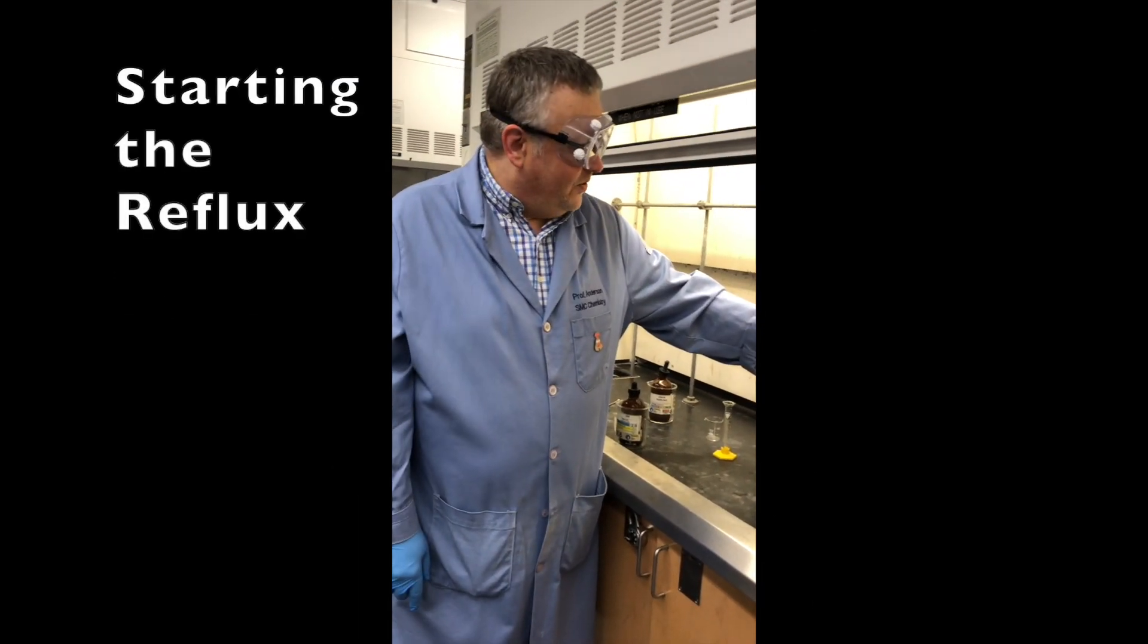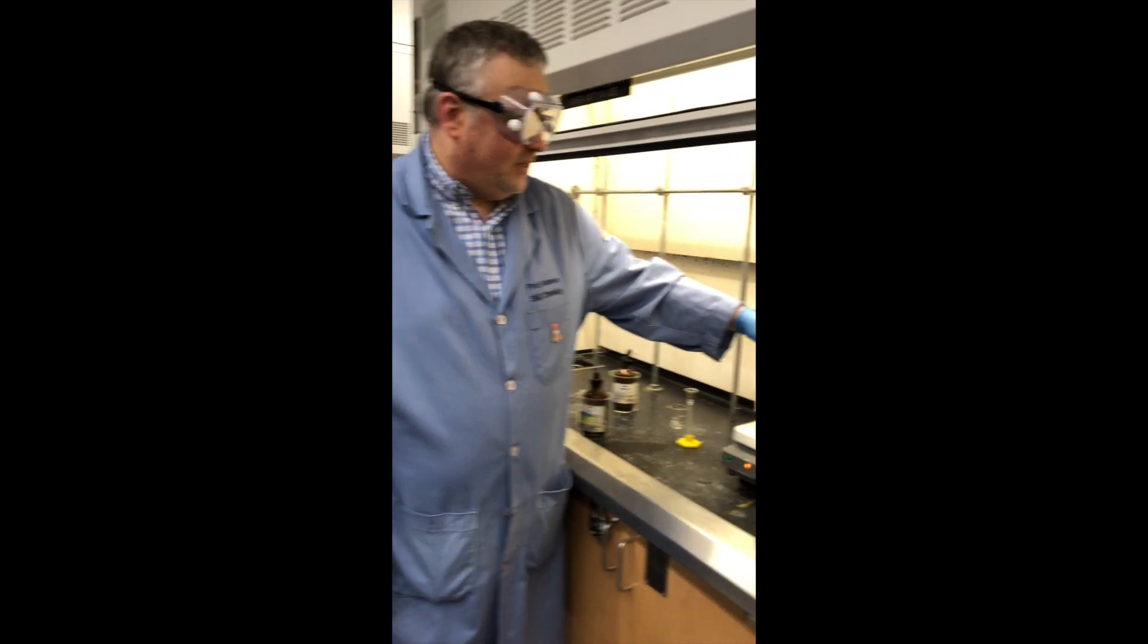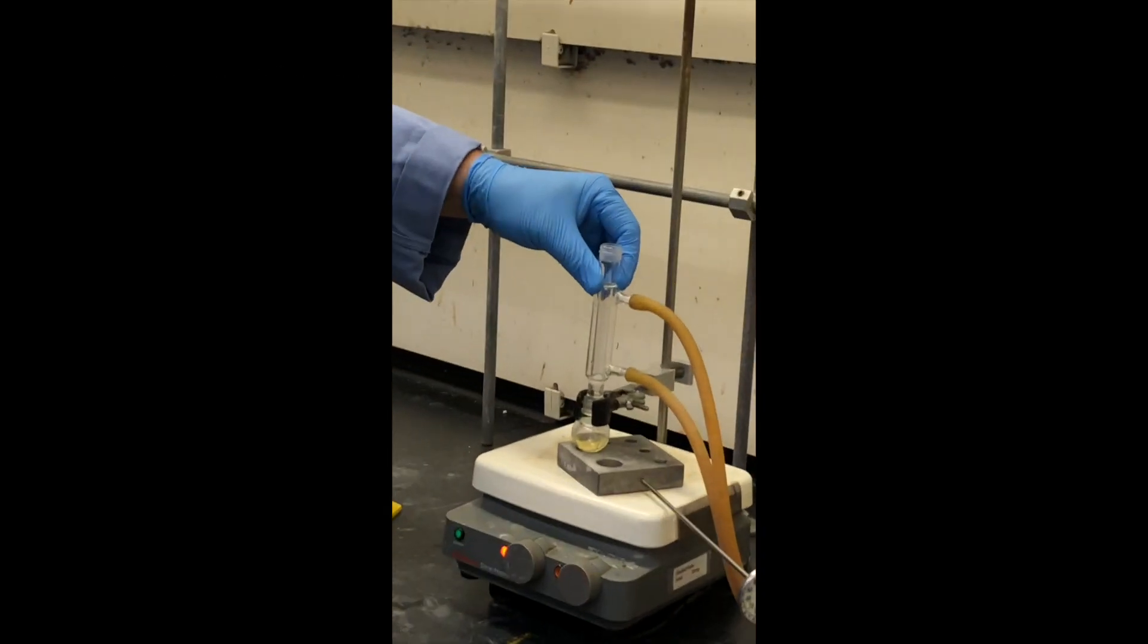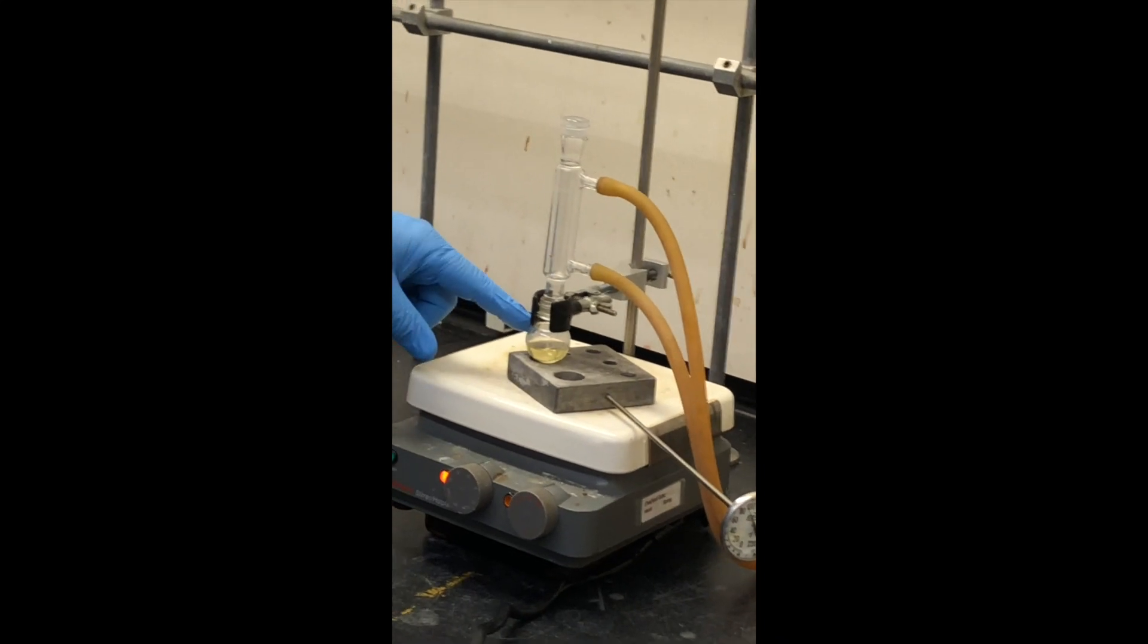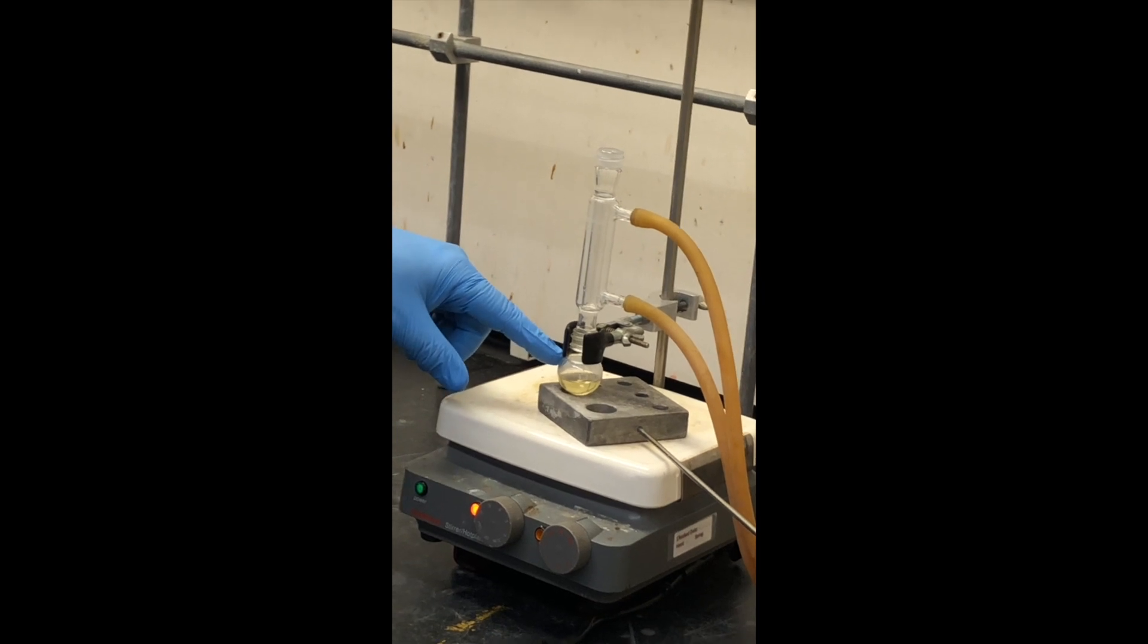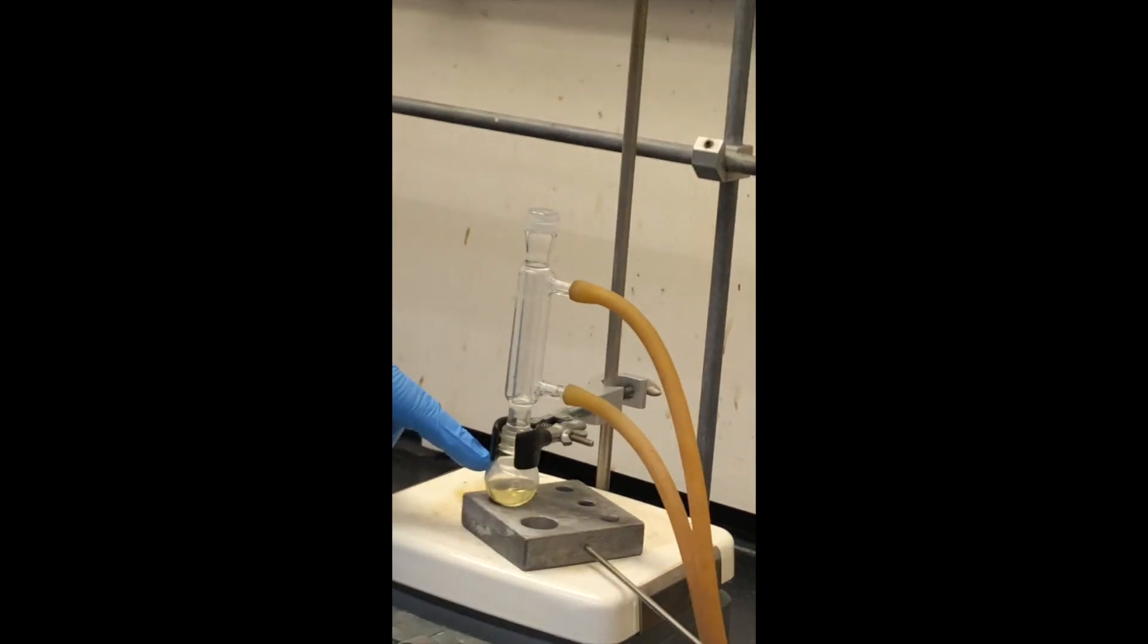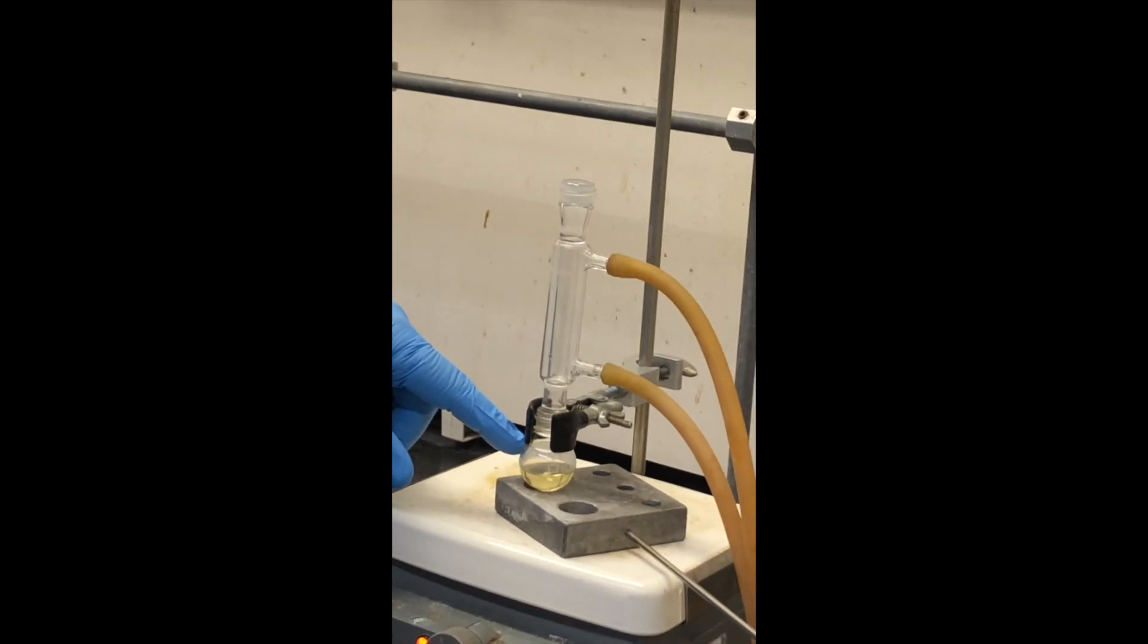We have just completed the setup of the reflux for the alcohol esterification lab. In the flask we have placed approximately 1.3 grams of the alcohol, 2.2 milliliters of glacial acetic acid, and a few drops of the sulfuric acid catalyst.